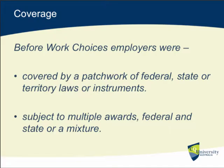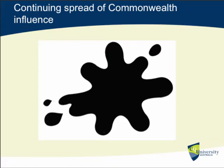This second part of week one deals principally with coverage. Before Work Choices came on the scene, employers and employees were covered by a patchwork of federal, state or territory laws or instruments, and were often subject to multiple awards — federal and state, or even a mixture of the two. That led to a lot of confusion at particular workplaces, with demarcation disputes between employees and unions as to whether they were in the right union. It was quite a confused system.